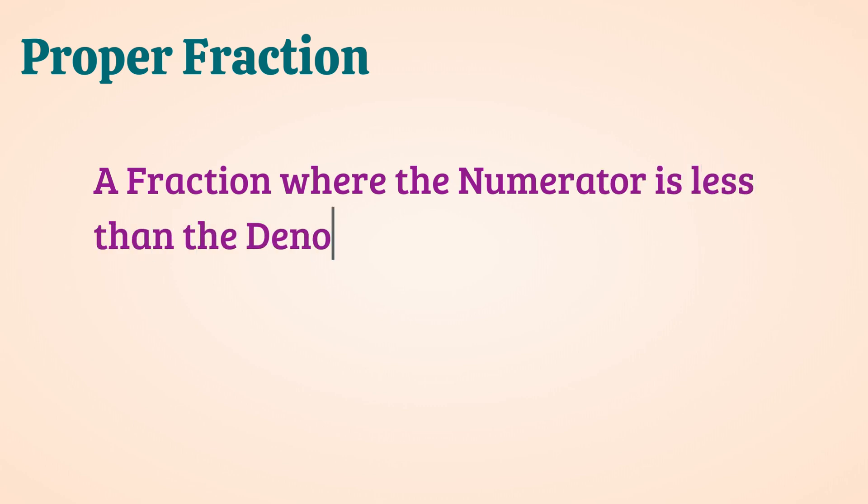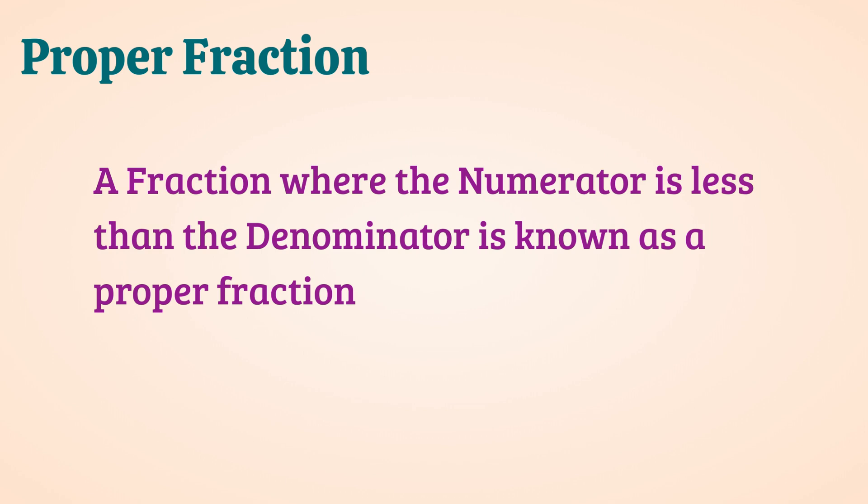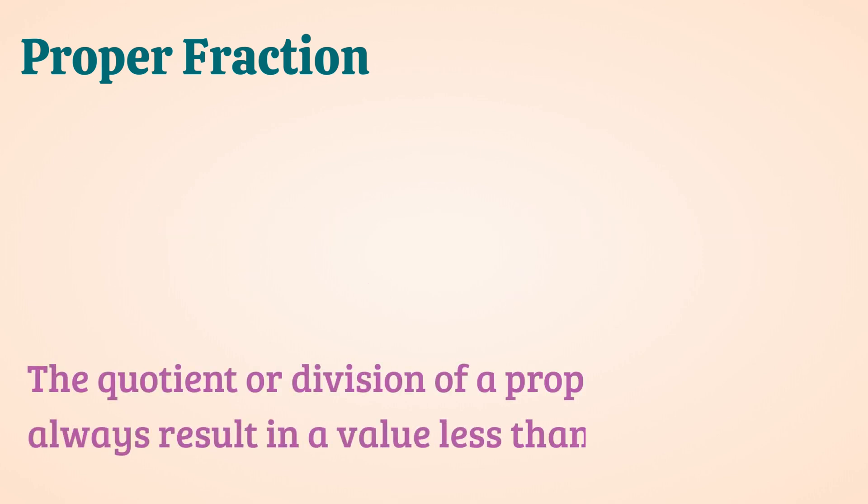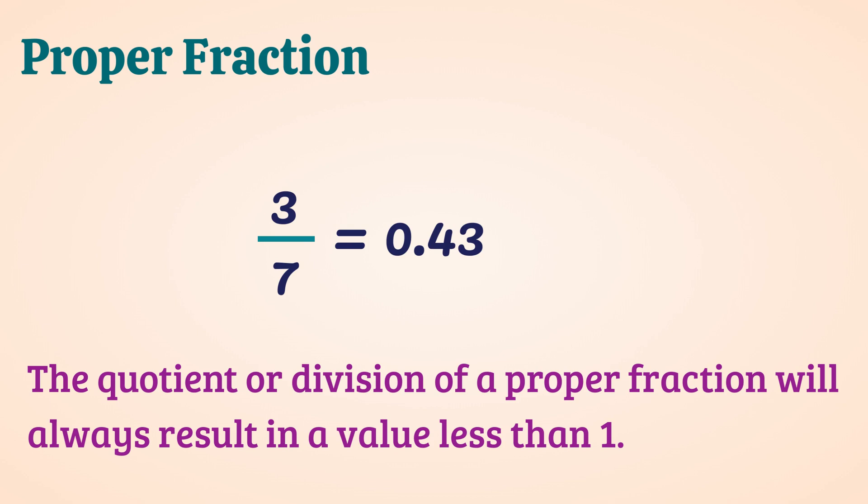Proper fraction. A fraction where the numerator is less than the denominator is known as a proper fraction. For example, 3 by 7. 3 is the numerator, 7 is the denominator, 3 is less than 7. The quotient or division of a proper fraction will always result in a value less than 1. 3 divided by 7 will give you 0.43, which is less than 1.